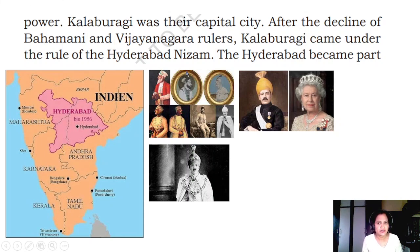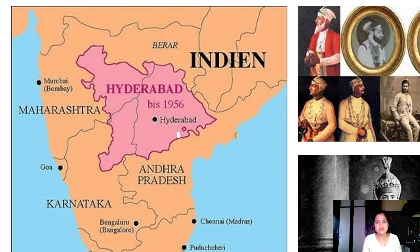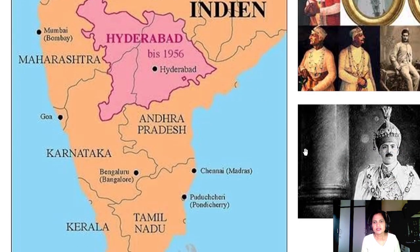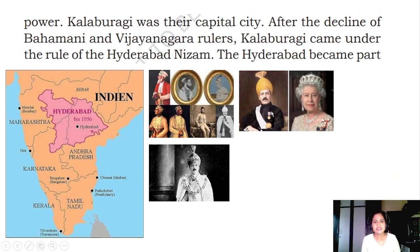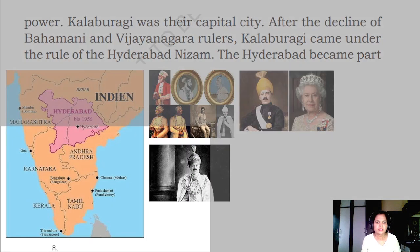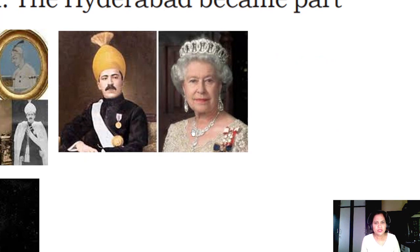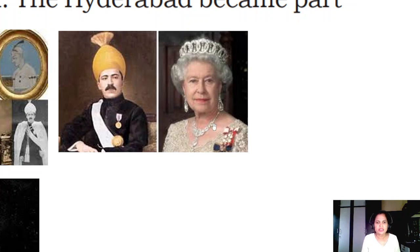Kalburgi came under the rule of the Hyderabad Nizams, who captured this region and ruled it. The area of Karnataka ruled by them is still called Hyderabad-Karnataka even today. The last king of the Hyderabad Nizam is shown here. Interestingly, a valuable necklace that the British Queen Elizabeth wore, which was the property of the Hyderabad Nizams, was taken from them and remains with the English royal family.